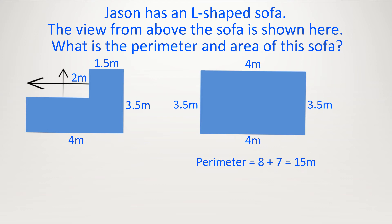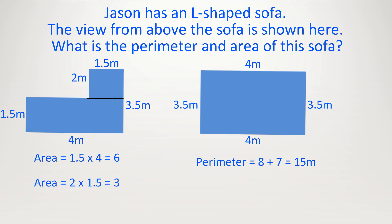What is the area of the floor taken up by Jason's sofa? Draw a line across — we're splitting it up into two rectangles. Area of the bottom rectangle: 1.5 times 4 equals 6 meters squared. Area of the top smaller rectangle: 2 times 1.5 equals 3. Add it up: 6 plus 3 equals 9 meters squared.